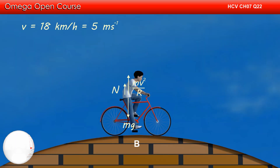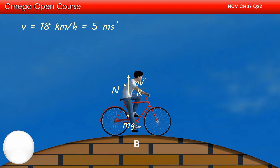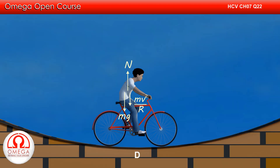As we have seen in the free body diagram of the cycle at point B, there is no horizontal force acting on the cycle. Also, the acceleration of the cycle is 0, meaning the net force on the cycle is 0. Therefore, there is no friction acting on the cycle. Similarly, the friction force is 0 at D.